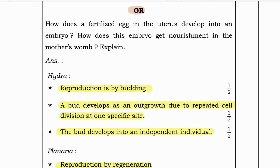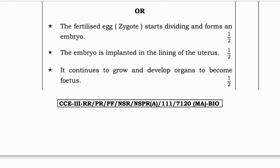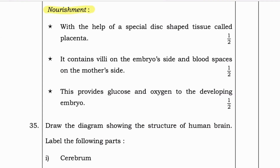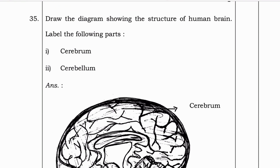Optional question: How does a fertilized egg in the uterus develop into an embryo? How does the embryo get nourishment in the mother's womb? The fertilized egg (zygote) starts dividing and forms an embryo, which is implanted in the lining of the uterus. It continues to grow and develop organs to become a fetus. For nourishment, a special disc-shaped tissue called the placenta — with villi on the embryo's side and blood spaces on the mother's side — provides glucose and oxygen to the developing embryo.